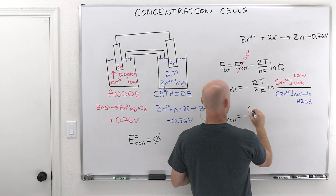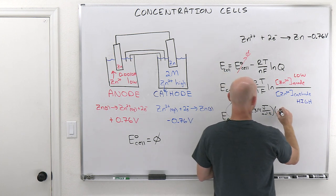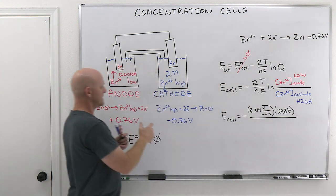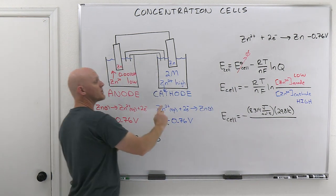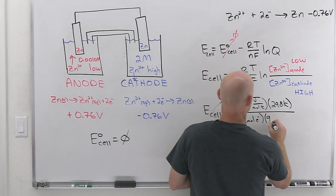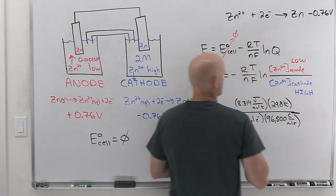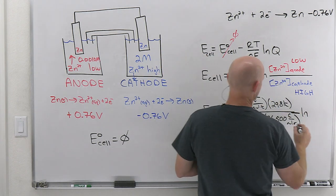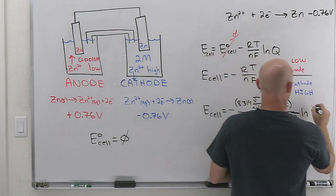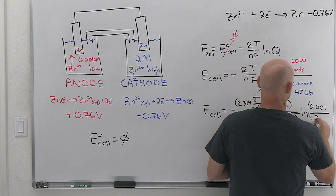So in this case, we've got the negative R and R is again, 8.314 joules per mole Kelvin times T. Let's assume we're doing this at 298 Kelvin. So a number of moles of electrons transferred. Here's two electrons lost. Here's two electrons gained. It's two electrons transferred Faraday's constant, 96,500 coulombs per mole of electron. So, and then finally natural log of Q here. And again, it's either low over high or anode over cathode. And the anode here is 0.001 molar. So in our cathode, we made two molar.